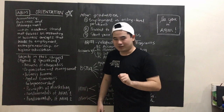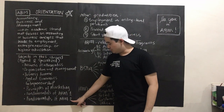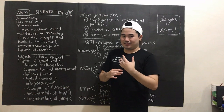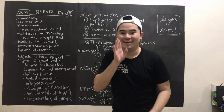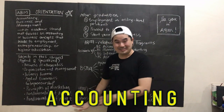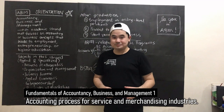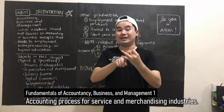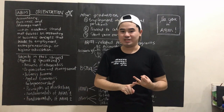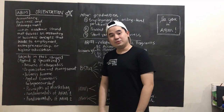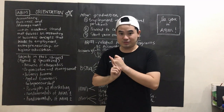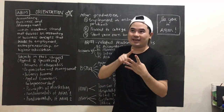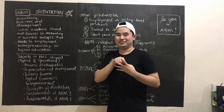And then we have a two-part subject: Fundamentals of ABM 1 and Fundamentals of ABM 2 — Fundamentals of Accountancy, Business and Management, Parts 1 and 2. Fundamentals of ABM 1 will focus on the accounting process for service companies and merchandising companies under sole proprietorship type of business. And then Fundamentals of ABM 2 will teach you how to prepare financial reports known as financial statements, how to analyze those financial statements, bank reconciliation, and the general principles of taxation.